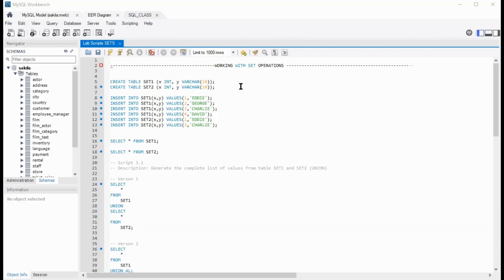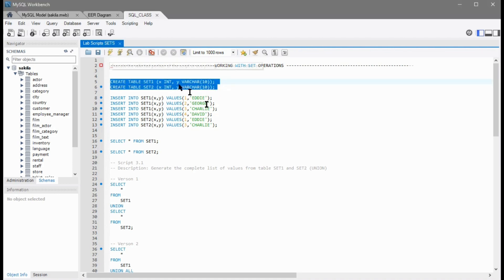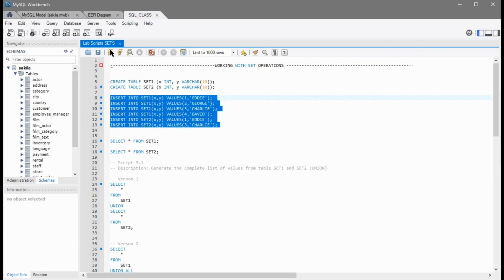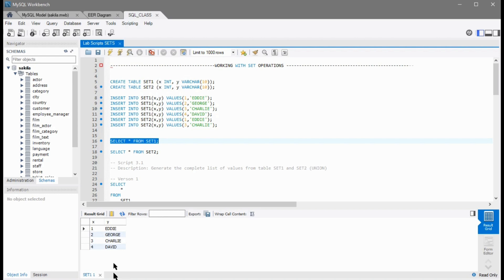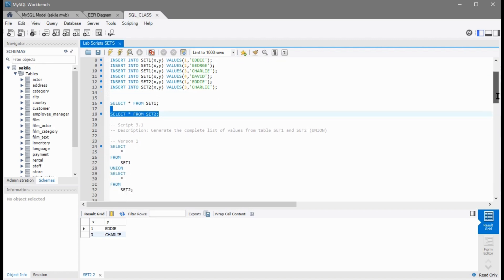We will create two tables, set1 and set2, and we will insert some data into those two tables. So let's see what we have in set1. We have four values: Eddie, George, Charlie, and David. Let's see what's in set2. So we have Eddie and Charlie.